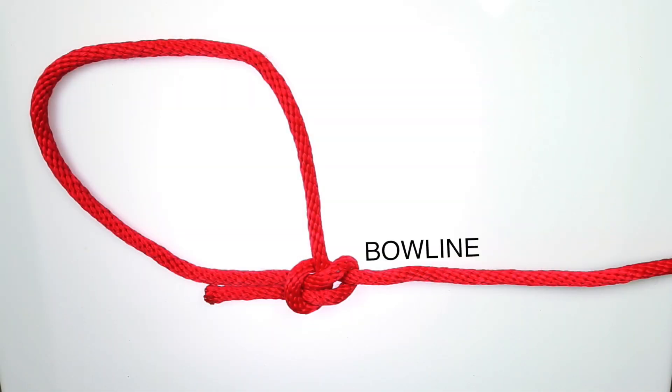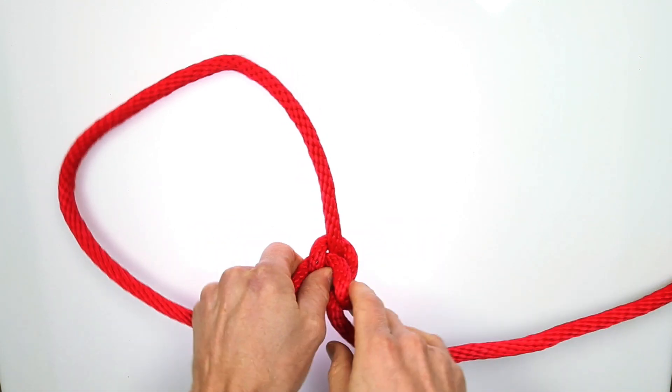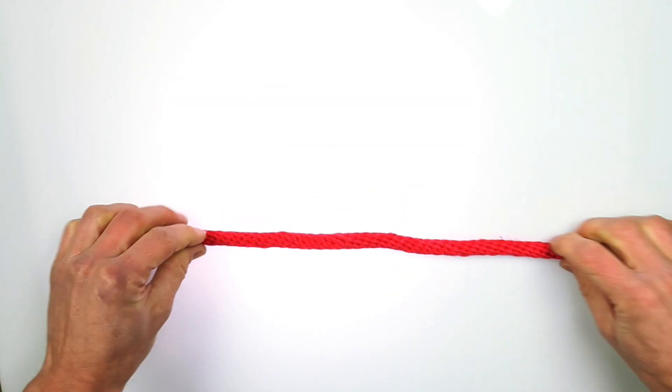The first one we're going to do is the bowline knot. It's really easy to tie and very useful. Now, this knot won't come undone, so it's perfect to use if you want something to stay secure and stay in place, but it's also really easy to undo.